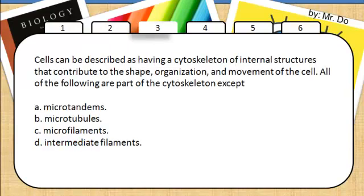3. Cells can be described as having a cytoskeleton of internal structures that contribute to the shape, organization, and movement of the cell. All of the following are part of the cytoskeleton, except for 4. Microtandems. I totally made that up.